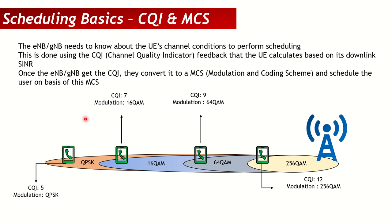Let's take an example: I have a 5G cell with four different mobiles. One mobile is near the cell, so it's in very good radio conditions. Another mobile is at the cell edge, very far away, so it's in poor radio conditions. How does the UE tell the gNB, or how does the gNB find out the radio conditions of each UE? That is where the CQI comes into play.